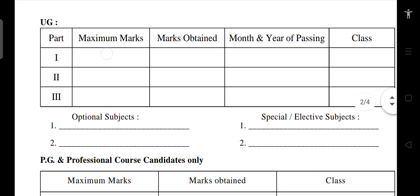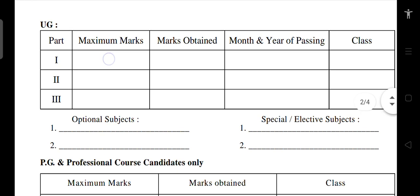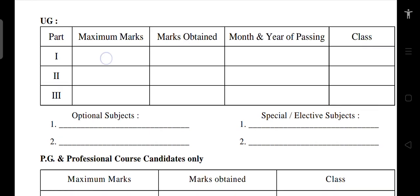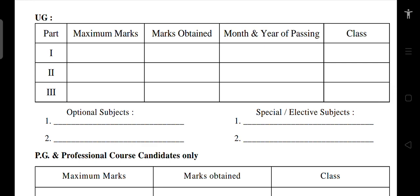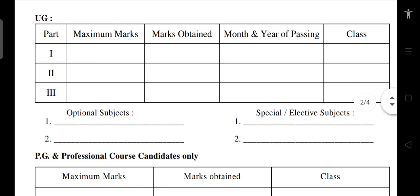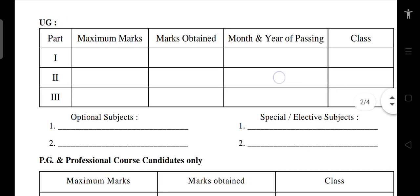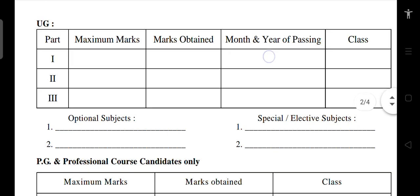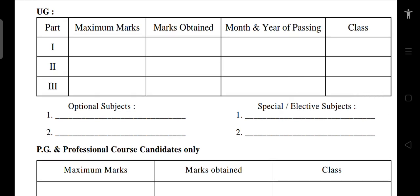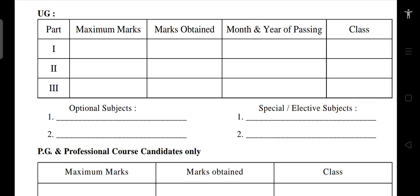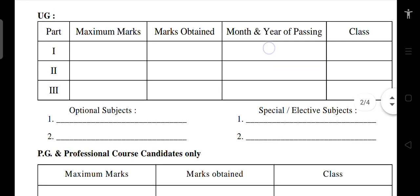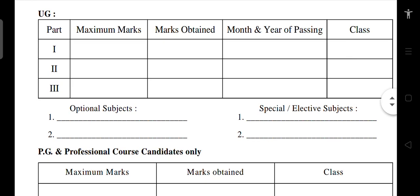For UG Part 1 marks, enter the marks obtained and maximum marks. For the 4 major subjects, enter Part 1 marks. Then go to Part 2 marks. Enter the month and year of passing for the last final semester — for example, April 2020.